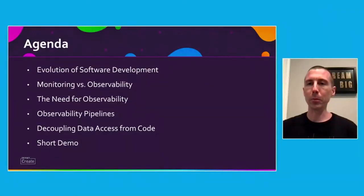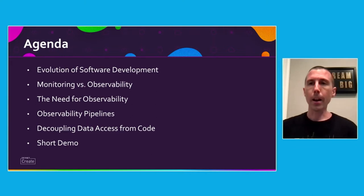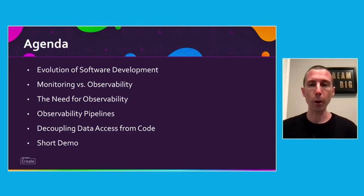What we're going to talk about today is really starting from the beginning — where do we come from, where are we today in terms of the evolution of software development, and why do we need the monitoring and observability capabilities that we have today? What is the real need for observability? What are some organizations doing in terms of constructing their observability pipelines so they have all the information they need, where they need it? And then we'll talk about dynamic observability, which is really taking observability to the next level.